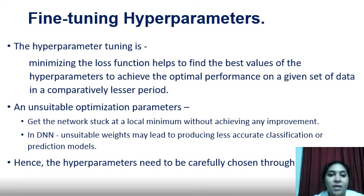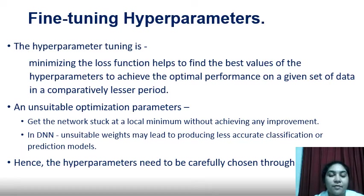Another important factor in training a convolutional neural network is hyperparameter tuning. It minimizes the loss function and helps find the best values of the hyperparameters to achieve optimal performance on a given dataset in a comparatively lesser period. These hyperparameters define the architecture of the model and directly control the nature of the training algorithms, with significant effect on performance.